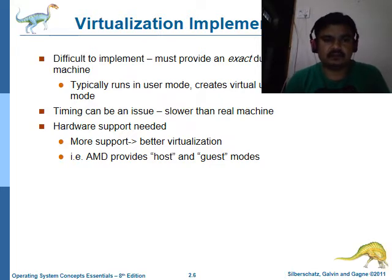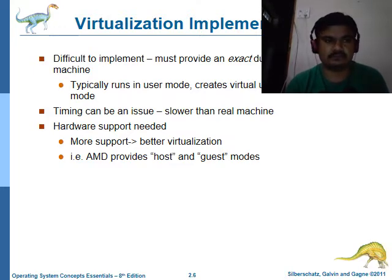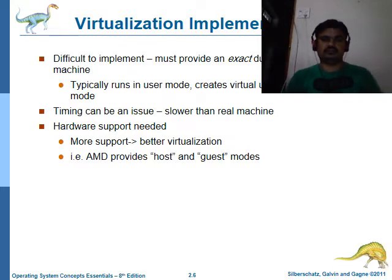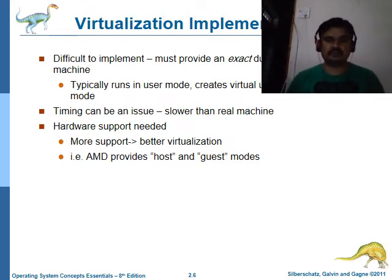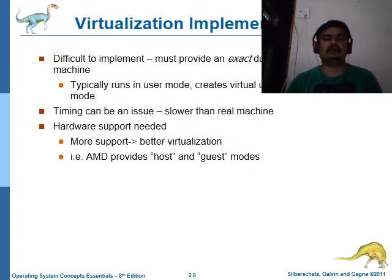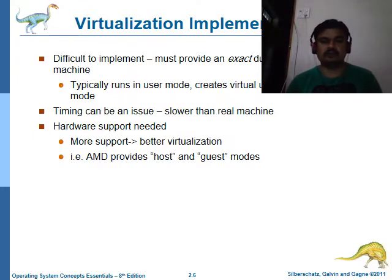A second point is that virtual machines typically run on user mode, creating virtual user mode and virtual kernel mode. In the previous diagram's Part A, a single process was available, but in Part B with virtual machines, we imagine three processes creating a virtual user mode and three different kernels — virtual kernel mode. Timing is also an issue: shared resources take more time to shift from the host operating system to the virtual operating system, so virtual machines may perform more slowly.